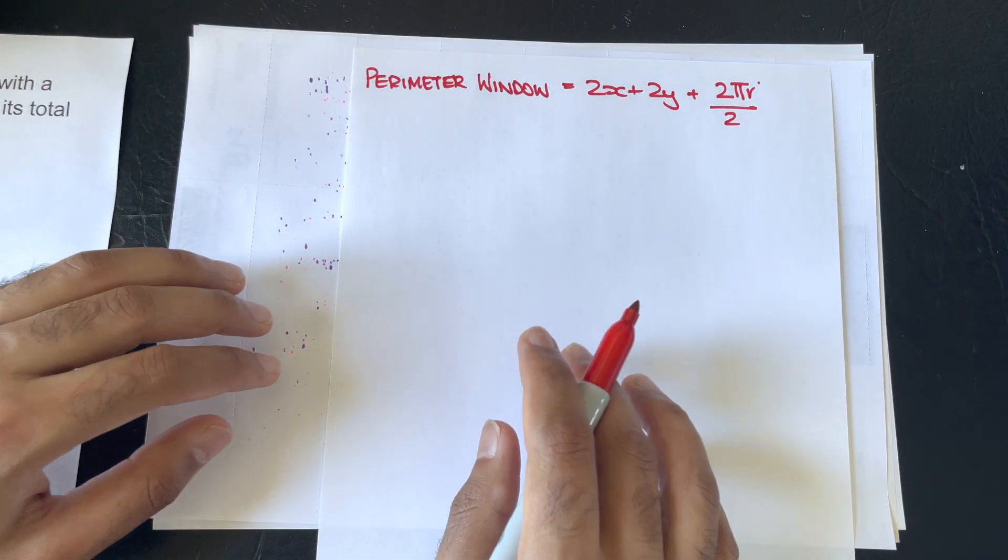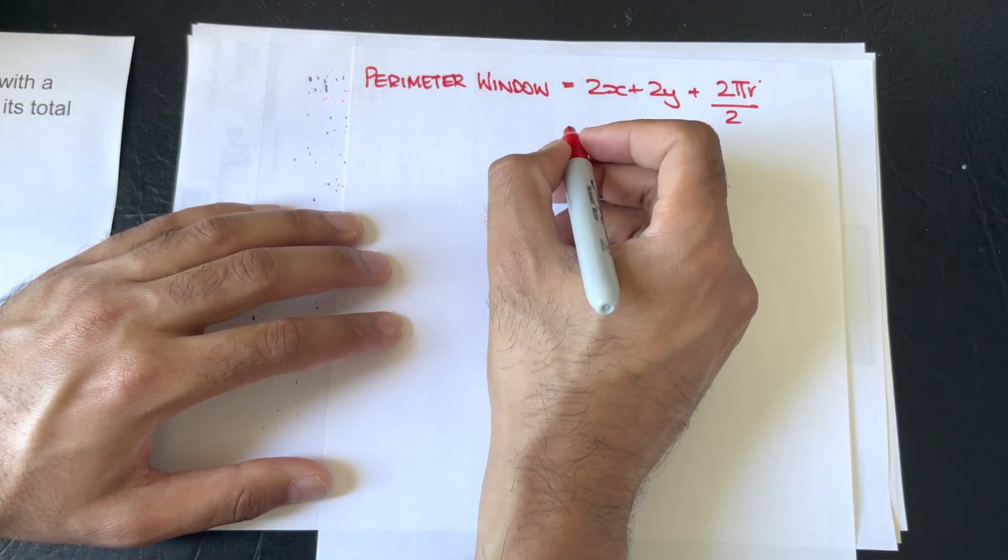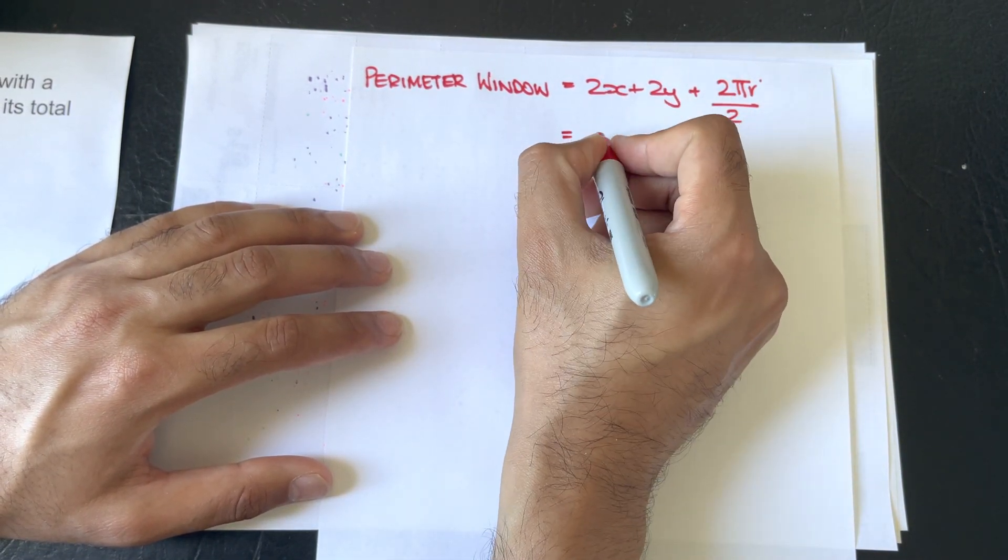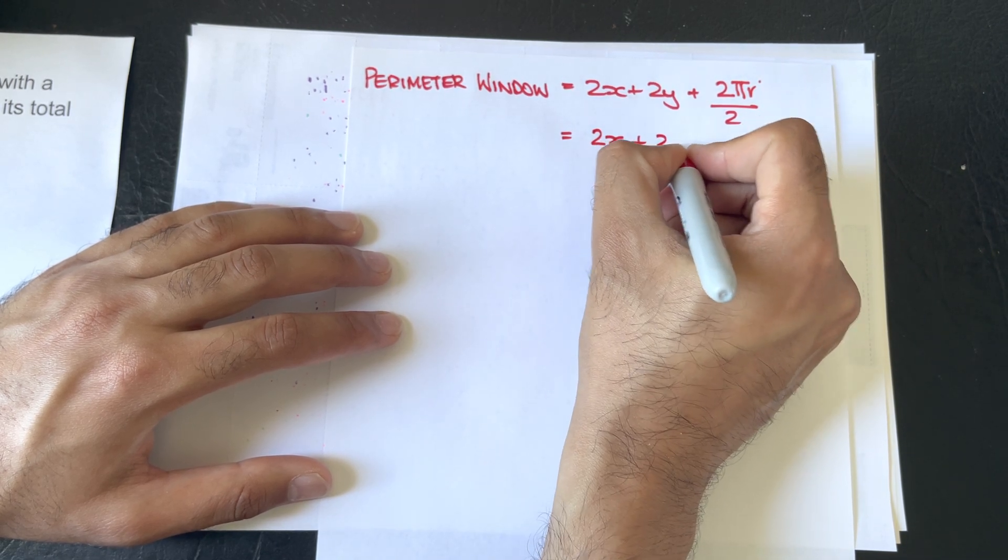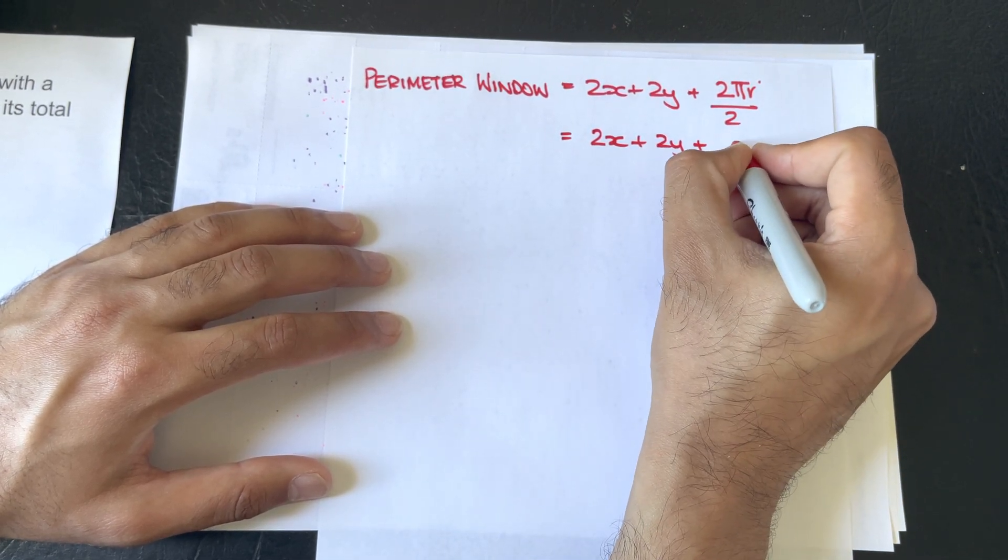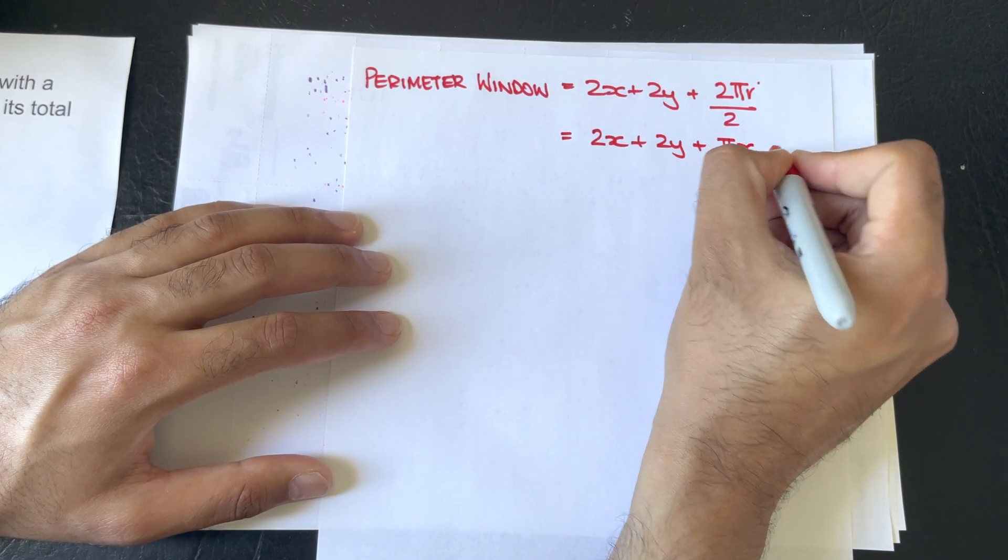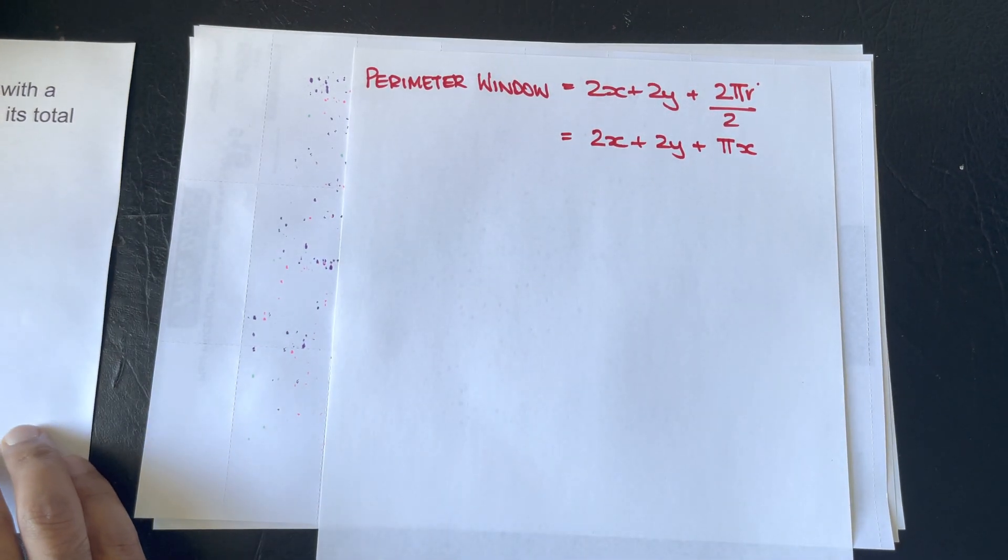So, the 2s will cancel out, and we will have a perimeter function of 2x plus 2y plus πx.